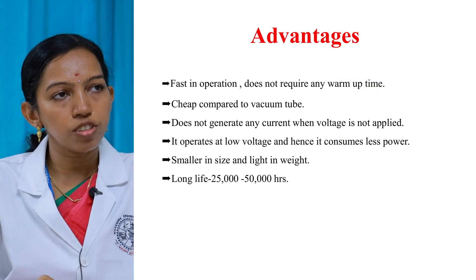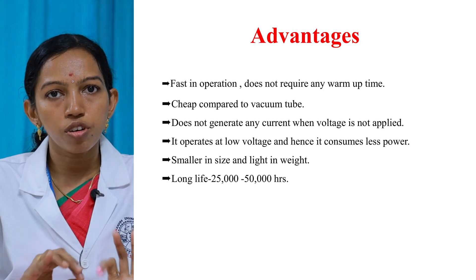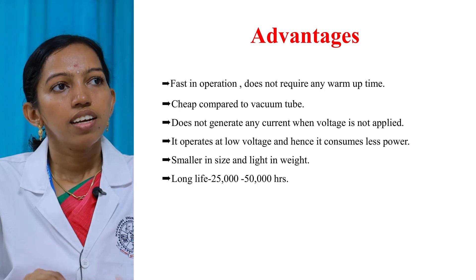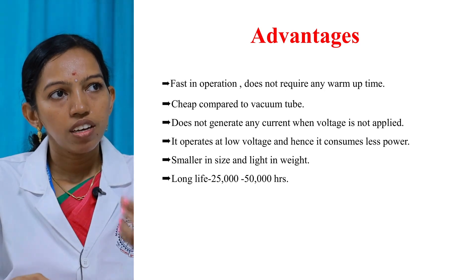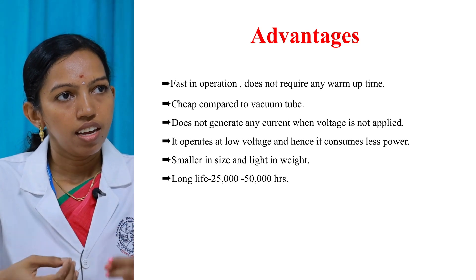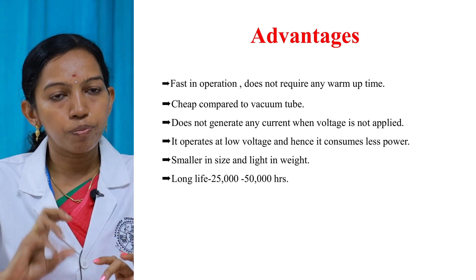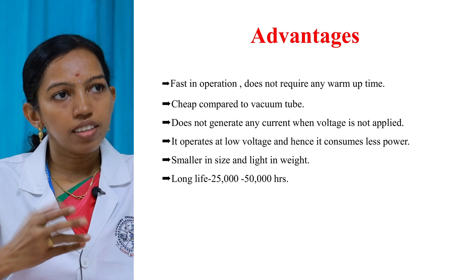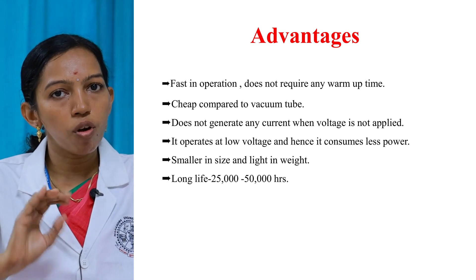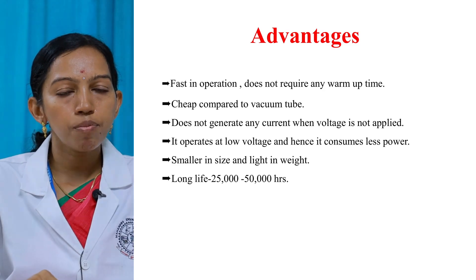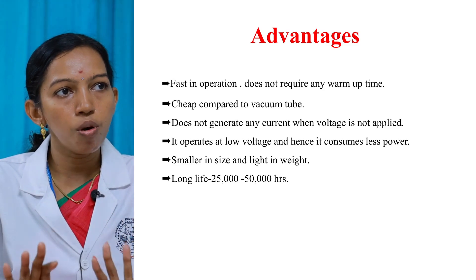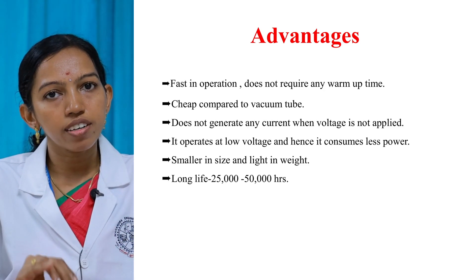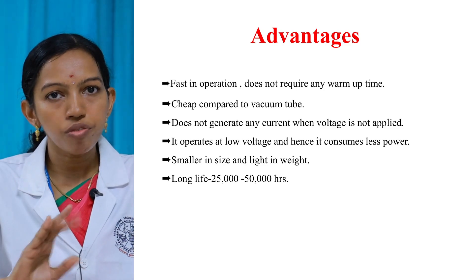Advantages of the P-N junction diode: there is no heating or warm-up time and the speed of operation is very fast. The cost is very cheap compared to vacuum tubes — less than 10 rupees. It does not operate unless proper bias condition is applied. It operates at very low voltage: 0.7 volt for silicon and 0.3 volt for germanium, so power consumption is very low. The size is smaller and weight is light, so it occupies very less space. The lifetime rating is 25,000 to 50,000 hours.